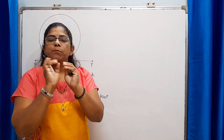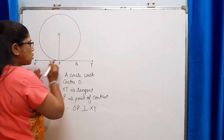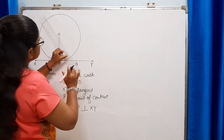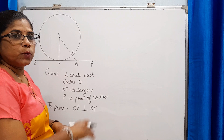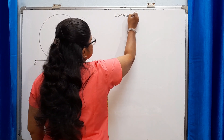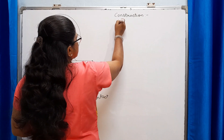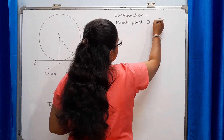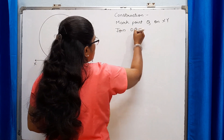For this we have to do one simple construction. We mark one point Q on XY and join OQ. When we join OQ, this line intersects the circle at point R. Construction: mark point Q on XY and join OQ.